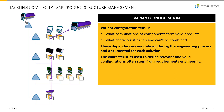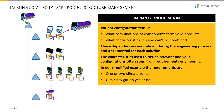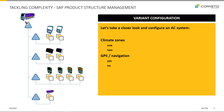The characteristics used to define relevant and valid configurations often stem from the requirements engineering of the product. In our simple example, we'll show two configurations: if our car has one or two climate zones, and if it comes with GPS functionality or not.